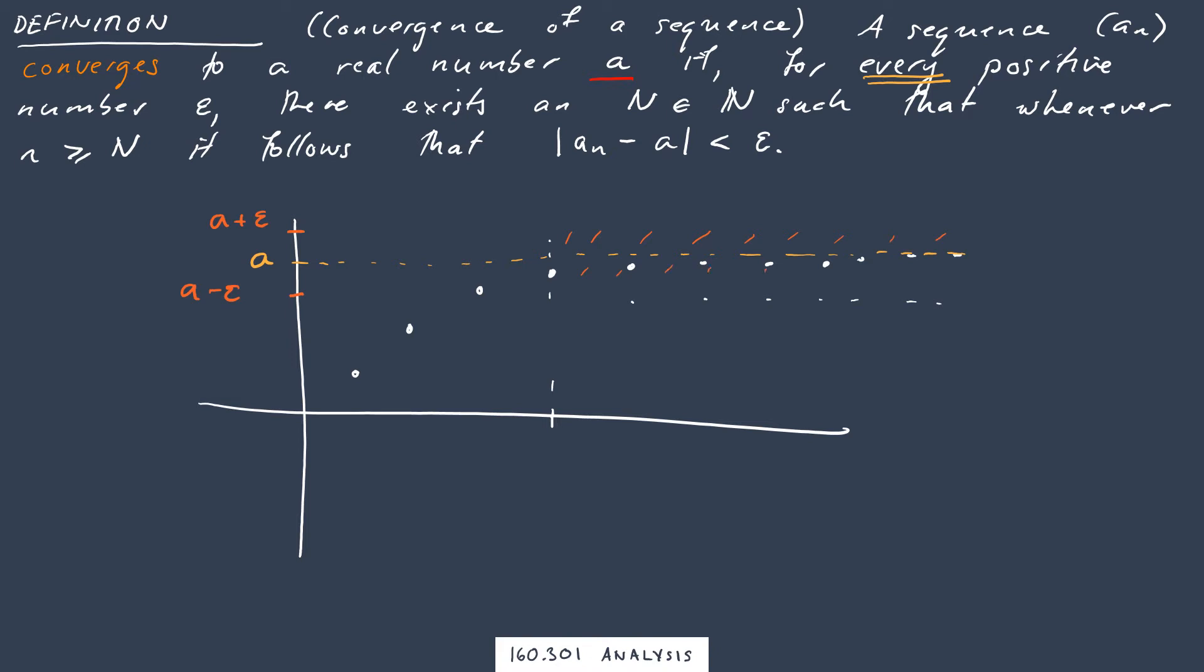So we're imagining that we've drawn our little band, we've chosen, so step one is we choose an epsilon, then we find an N and show all terms beyond a_N are in region. So that's, for this particular choice of epsilon, we've shown, if we can, we've found our N equals 4, and we've shown that everything is within this little band beyond there.